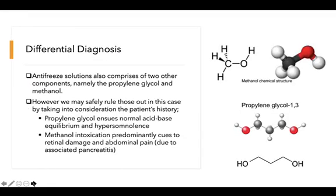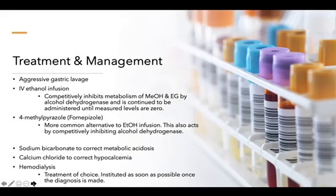Besides ethylene glycol, antifreeze solutions can also contain propylene glycol and methanol. However, we can rule both out in this case. Propylene glycol maintains normal acid-base equilibrium, whereas our patient presented with a wide anion-gap metabolic acidosis. Methanol intoxication predominantly causes retinal damage and abdominal pain due to associated pancreatitis; however, this patient denies abdominal pain and his vision is perfectly intact on examination.